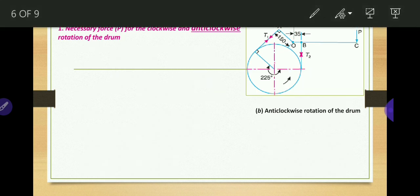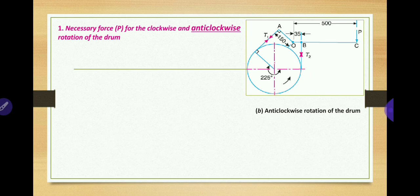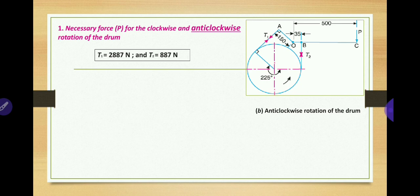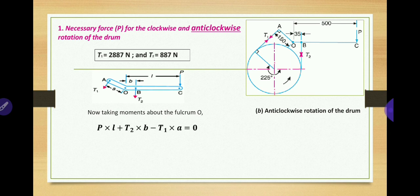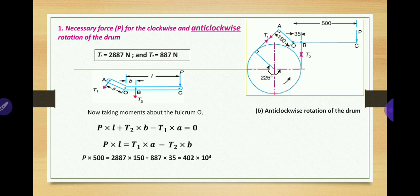For anticlockwise rotation of the drum, the tight and slack sides are reversed: T1 is now towards point A and T2 towards point B. The values of T1 and T2 remain the same magnitude, but their positions change. Taking moments about point O with the updated directions and substituting all values of T1, T2, L, A, and B, we get P equals 804 N for anticlockwise drum rotation.